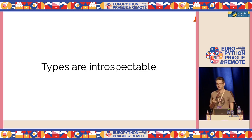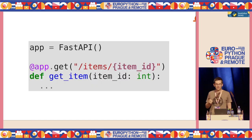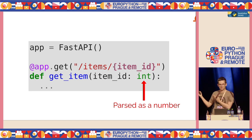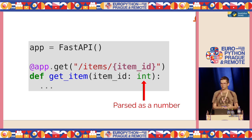Types are also introspectable at runtime, and this can be used by libraries or in your own code. For example, in the FastAPI library, when you annotate a parameter with a data type, not only are you documenting what's going on, but the framework itself uses this information to parse that parameter from the URL in a specific way — and if it's not an integer, it will return an error to the HTTP client.